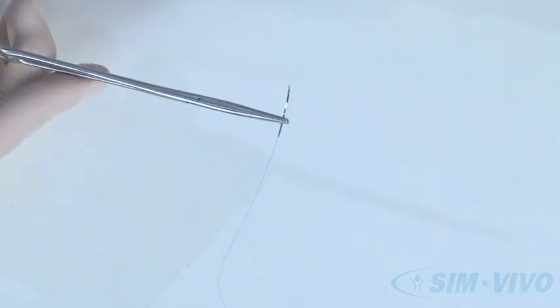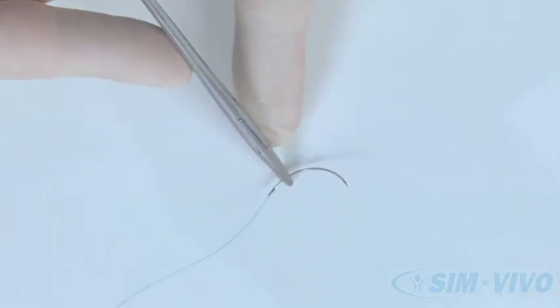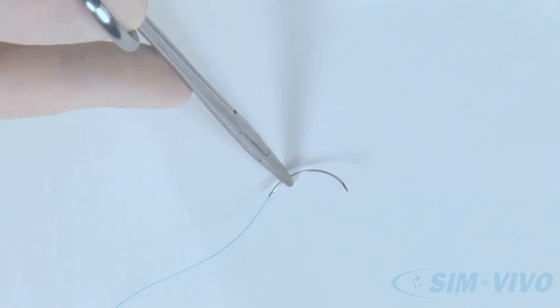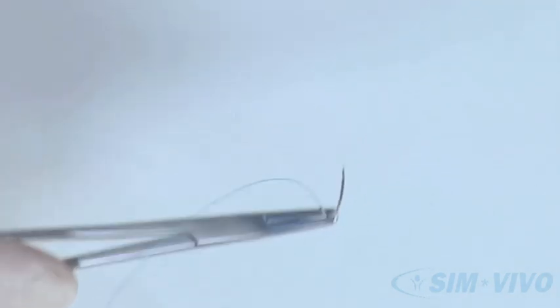Hold the long end of the suture with the needle on it straight up from the point where the suture was placed. Always be aware of the needle location. In general, don't grasp the needle with your hand. Don't poke yourself.